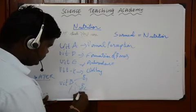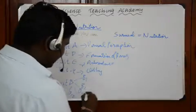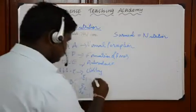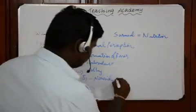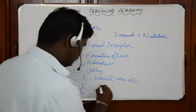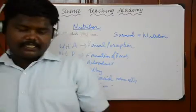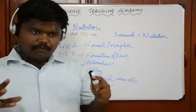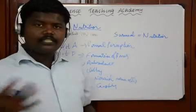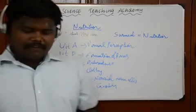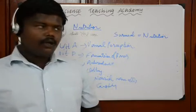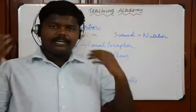Moving to water-soluble vitamins: the B-complex family includes B1, B2, B6, and B12, each with specific activities. B1 is essential for nourishment of nerve cells. B2 is essential for carbohydrate metabolism. B6 is essential for normal metabolism of amino acids and fats — contributing to protein metabolism.